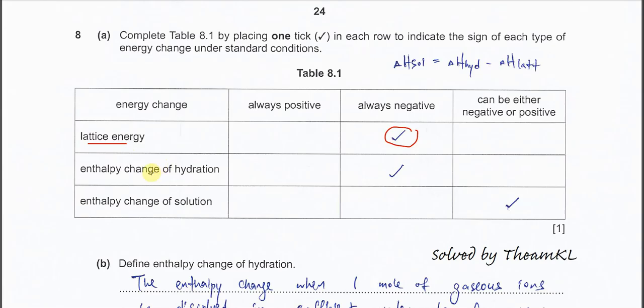The enthalpy change of hydration is where the gaseous ion dissolves in a large amount of water to form a solution. This is also bond formation only, so it releases energy — it's always negative.